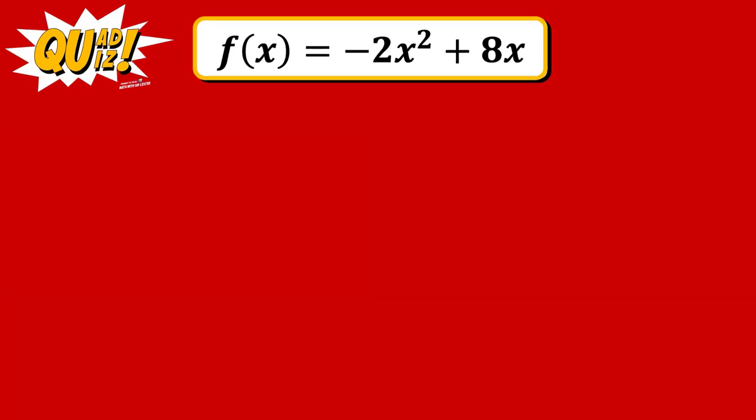The answers earlier: our vertex is at (2, 8). The concavity opens downward, and our maximum and minimum values are 8 and negative infinity respectively. We can connect all 3 concepts by discussing the coefficients of this function, structured similarly to the quadratic equation. The coefficient a is the coefficient of x squared, so we have negative 2 as the numerical coefficient of x squared.